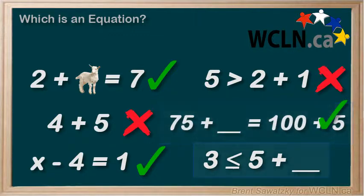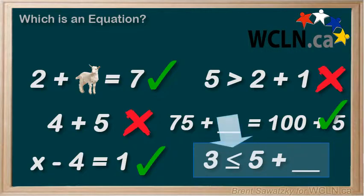Last one, 3 is less than or equal to 5 plus blank. Less than or equal looks a bit like an equal sign, but it's not a true equal sign. This is not an equation.